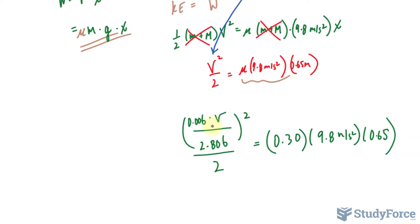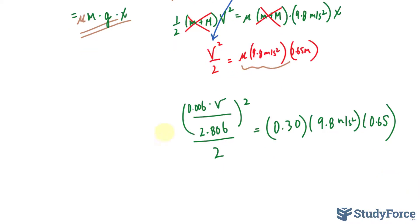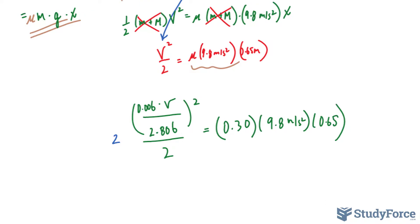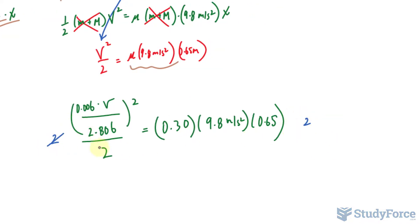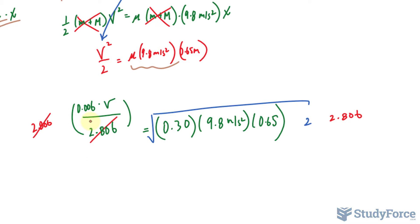We need to solve for v, and you can solve for v by breaking this down little by little. For example, you can start by multiplying both sides by 2, that gets rid of this 2. Then square rooting both sides, that gets rid of this square and square root. So let me erase everything so far that we don't need. Then we multiply both sides by 2.806, that gets rid of that. And we divide both sides by 0.006.